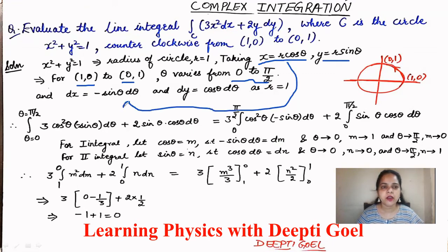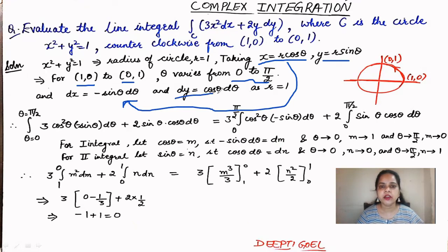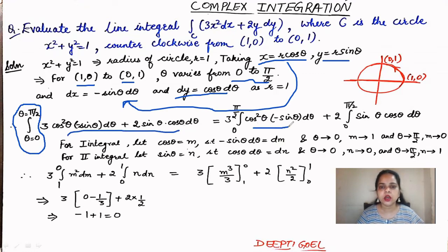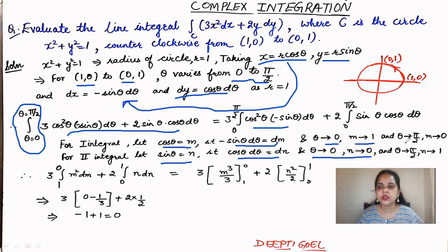Differentiating with r = 1 gives dx = -sin θ dθ and dy = cos θ dθ. We substitute x, y, dx, dy and set the limits for θ from 0 to π/2. To solve, we let m = cos θ and n = sin θ, giving dm = -sin θ dθ and dn = cos θ dθ, with limits m: 1→0 and n: 0→1. Integrating, we get the answer equal to 0.